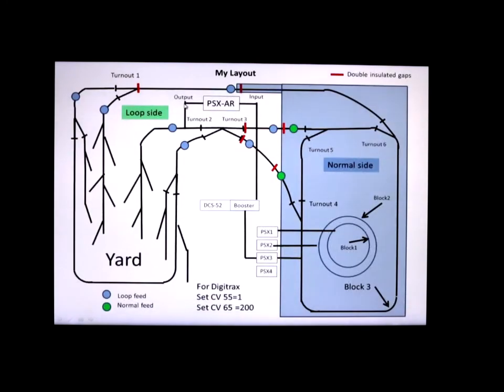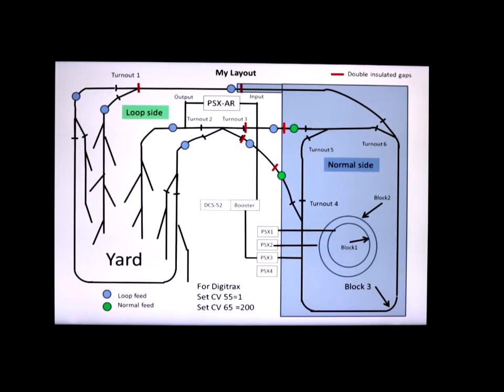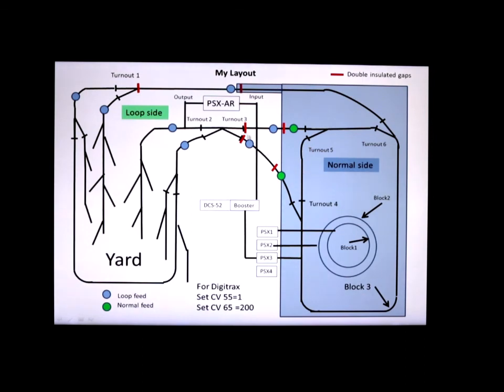Okay, next, this is an example of my layout. It looks a little complicated, and it is, but it works. Now, everything in blue shaded that you see here is, in fact, the normal side of the zone, of block 3. The left side is the loop side, the isolated loop side. And, you can see here are the double insulated gaps I talked about. And, the transition point. And, same here on this leg of the frog. And, then everything over here, to the left, is all loop.